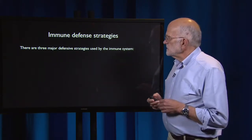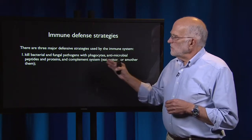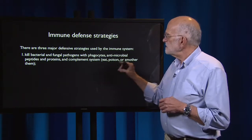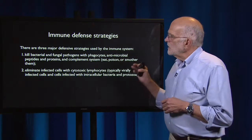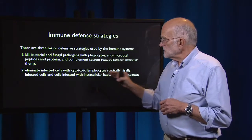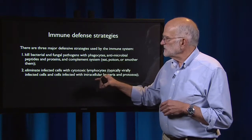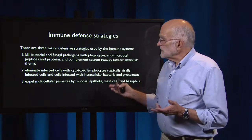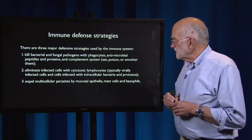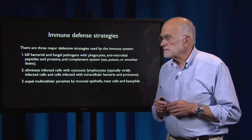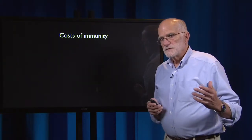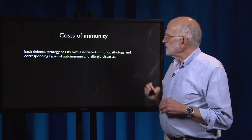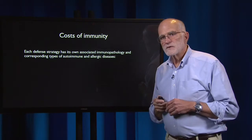There are several immune defense strategies. First, kill bacterial and fungal pathogens with phagocytes, antimicrobial peptides and proteins, and the complement system — in other words, eat, poison, or smother them. Second, eliminate infected cells with cytotoxic lymphocytes, typically virally infected cells and cells infected with intracellular bacteria and protozoa. Third, expel multicellular parasites by mucosal epithelia, mast cells, and basophils. All of these defenses have associated costs — each has its own immunopathology and corresponding types of autoimmune and allergic disease.